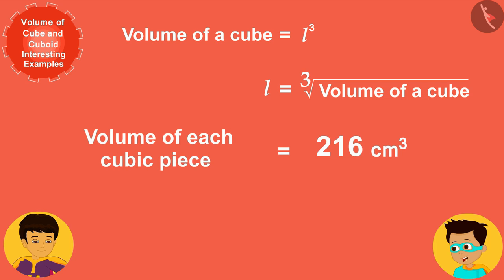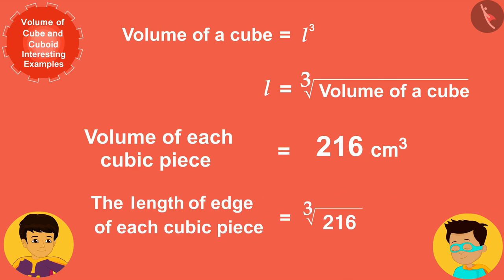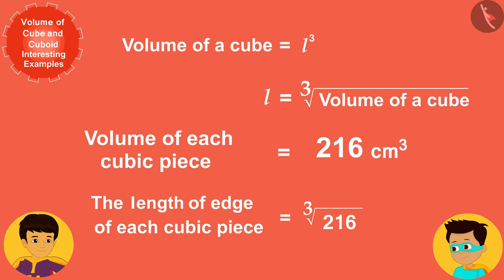Here, the volume of each cubic piece is 216 centimeters cubed. If we write this here instead of the volume of the cube in this way, we can easily find the length of the edge of each piece. See, the length of the edge of each cubic piece is 6 centimeters.